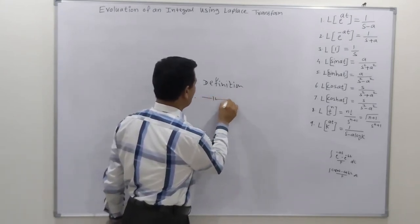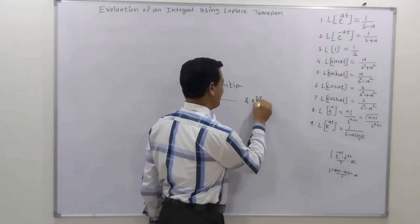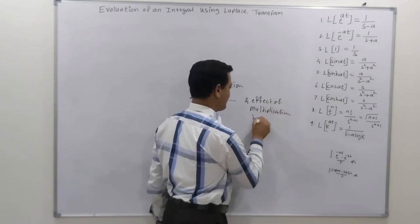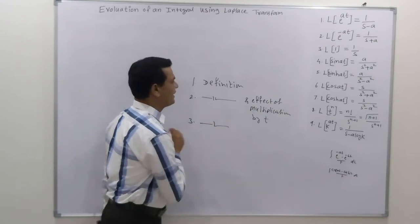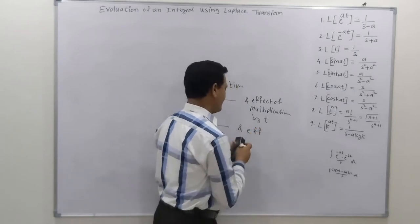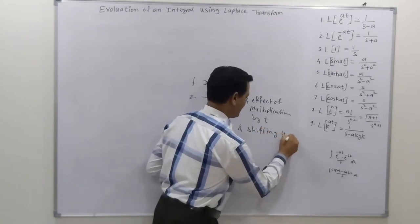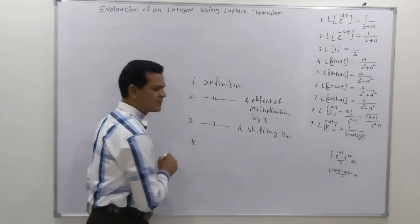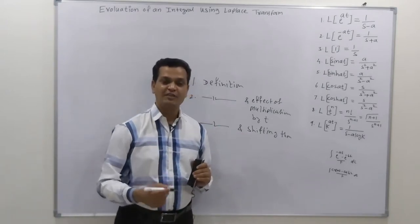The second concept evaluates the integral using the definition of Laplace transformation along with the effect of multiplication by t property. We also learned how to find the value of integration using the definition and the first shifting theorem. These three topics were covered in our previous video lecture. Now in this lecture we learn how to find the value of an integral using the definition and the effect of division by t property.